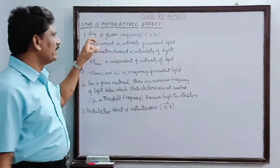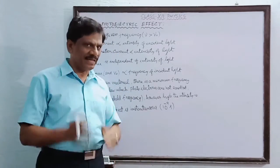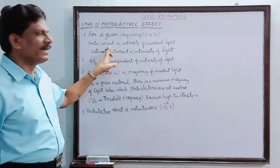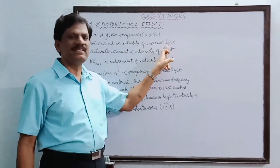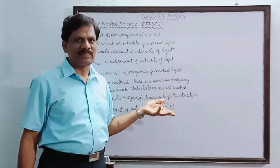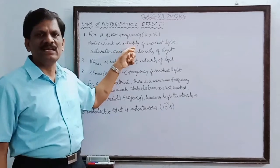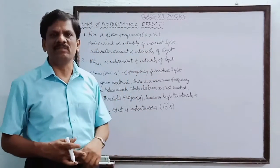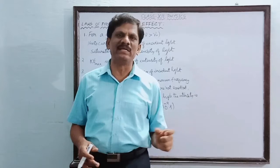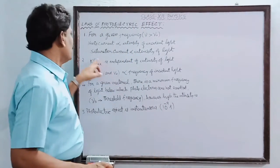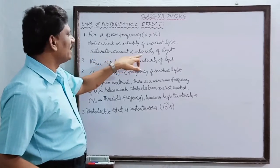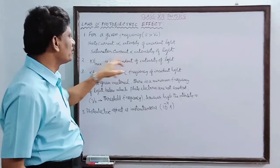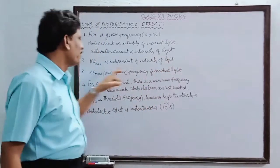The first law: for a given frequency of incident light greater than the threshold frequency, the photocurrent or photoelectric current is directly proportional to the intensity of the incident light — we already proved this graphically. The intensity of light is the number of photons incident per unit area per second, and the current is the number of photoelectrons emitted per unit area per second. Therefore, the saturation current is also proportional to the intensity of light.